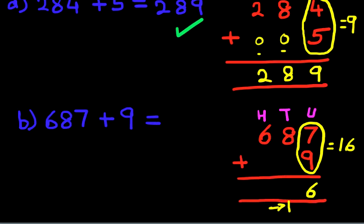Now we add the tens. Well, we have 8 over here. We've got nothing over here. It's 0. But don't forget the 1 at the bottom. So 8 plus 0 is 8, plus the 1 over here. 8 plus 1 is 9. Now we add the hundreds column. Well, we just have 6 plus 0 is 6. And that is our answer.